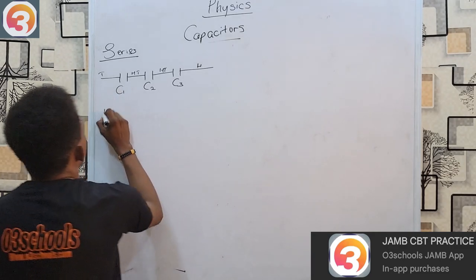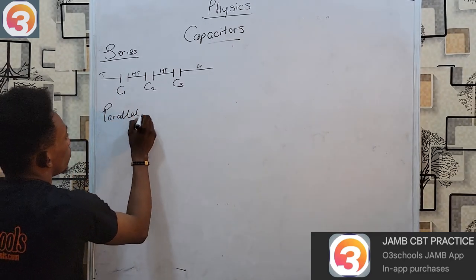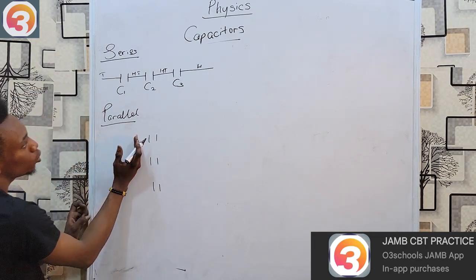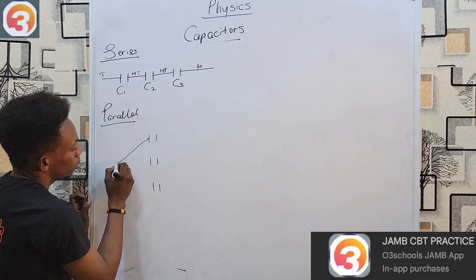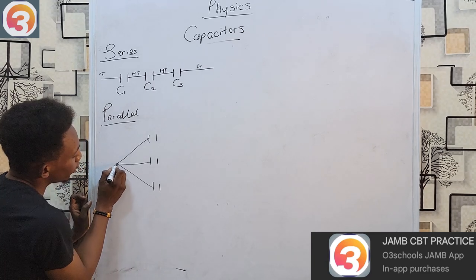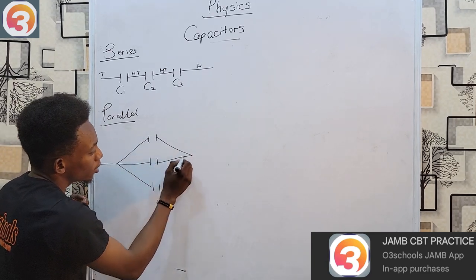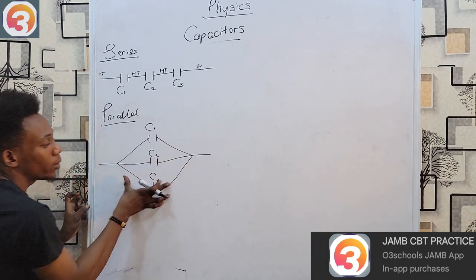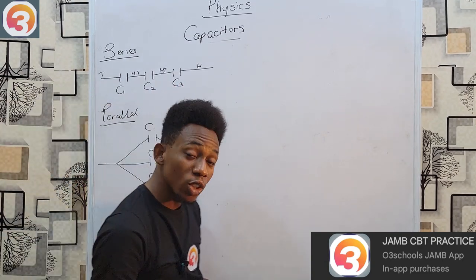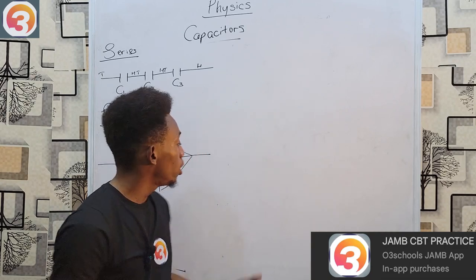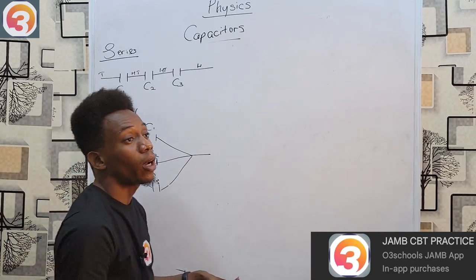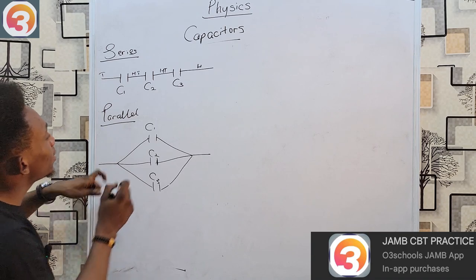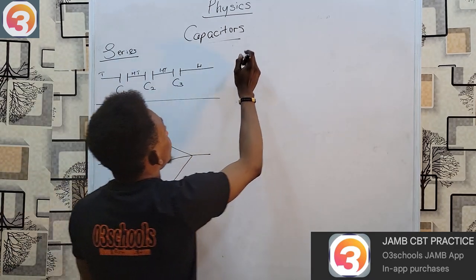For a parallel connection, all the tails gather to one single point and come out as one, while all the heads also gather at one point and come out as one. Note that your circuit doesn't have to be purely series or purely parallel — it could be a combination of both, where some capacitors are parallel to each other and some are in series with each other.